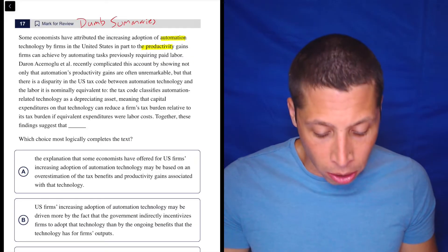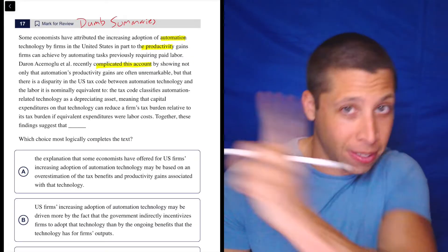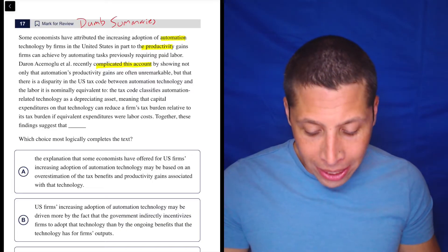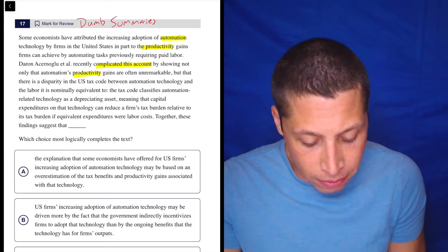Darren Acemoglu et al. recently complicated this account. That is a fancy way of saying the other thing is wrong by showing not only that automation's productivity gains are often unremarkable, so productivity unremarkable.